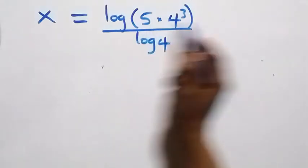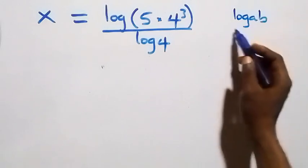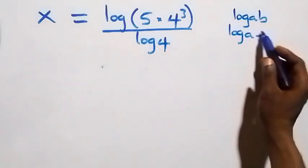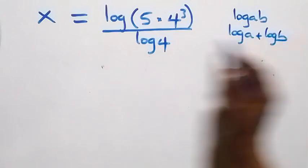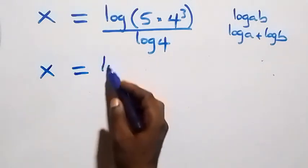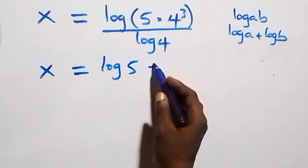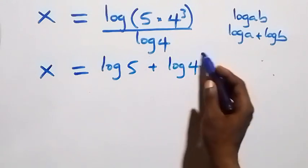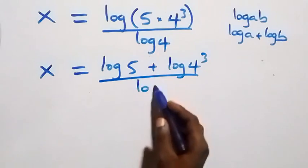This follows from the product law of logarithms: log of a times b equals log a plus log b. So it becomes x equals log 5 plus log of 4 raised to power 3, all over log 4.